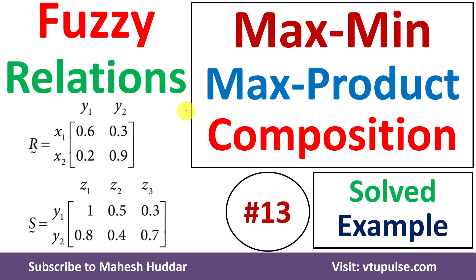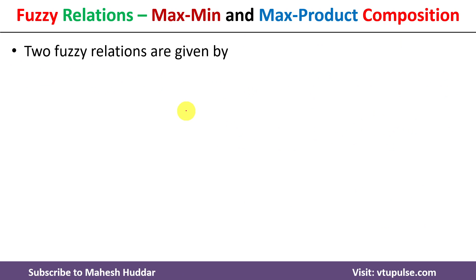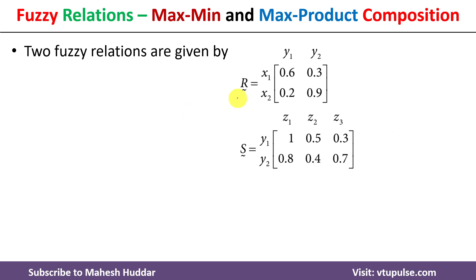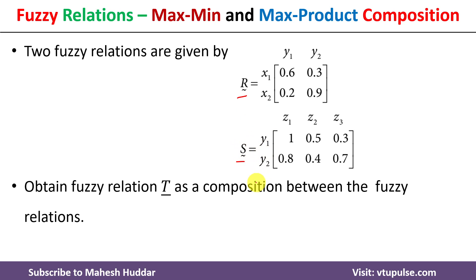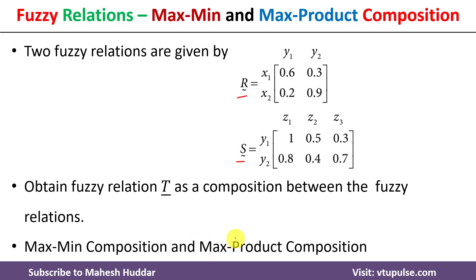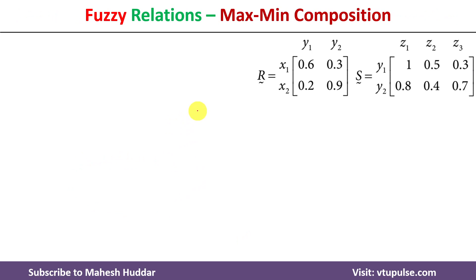Welcome back. In this video I will discuss how to perform max-min and max-product composition on given fuzzy relations, with the help of a simple solved example. We have been given two fuzzy relations R and S. Using these, we need to perform the max-min and max-product composition and then find the new fuzzy relation T.